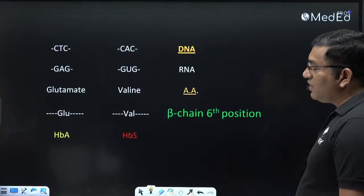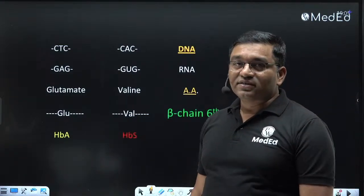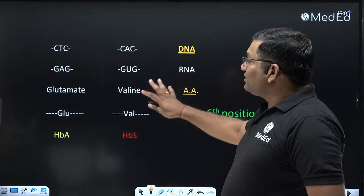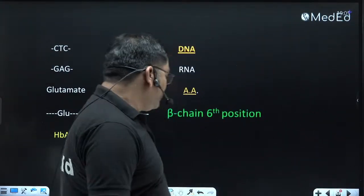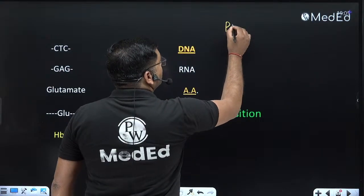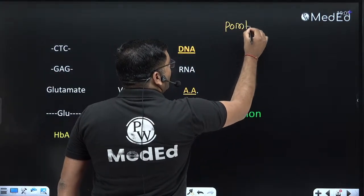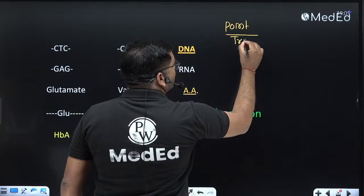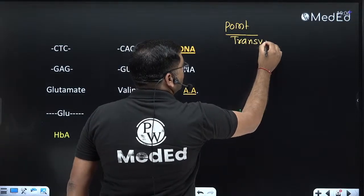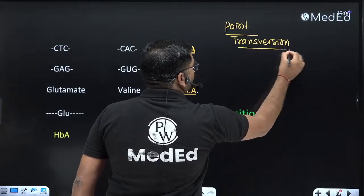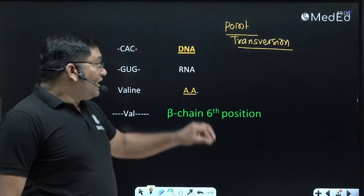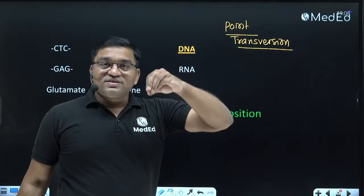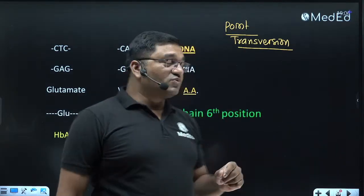Sickle cell anemia is a type of point mutation — specifically a transversion type of point mutation. In transversion, purines are replaced by pyrimidines or pyrimidines are replaced by purines. It involves substitution of a single base.